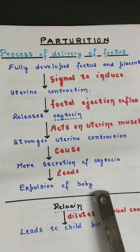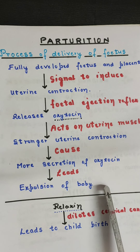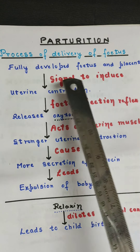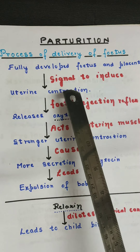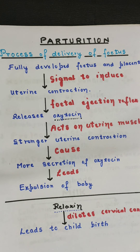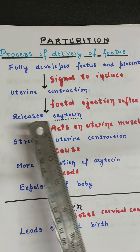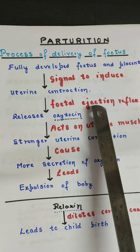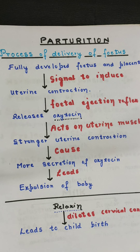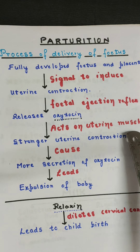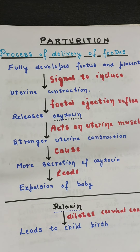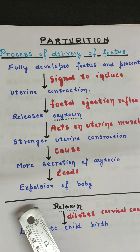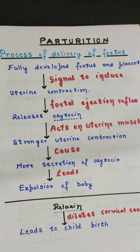To summarize: the placenta and fetus induce signals causing uterine contraction — the fetal ejection reflex. This triggers secretion of oxytocin, which causes more uterine contraction, which in turn causes more secretion of oxytocin. This positive feedback loop ultimately leads to the birth of the baby.